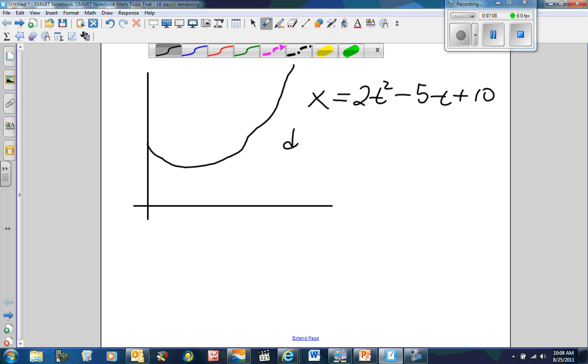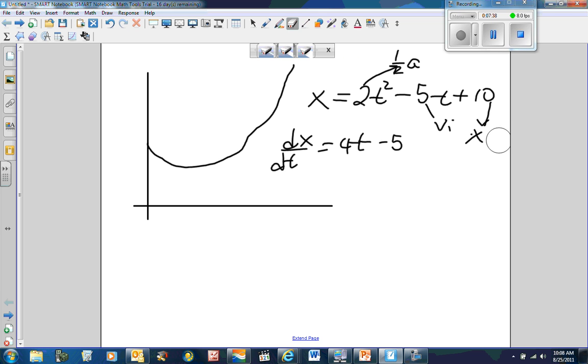And what this means, when I take the derivative, dx/dt, I got 4t minus 5. And what this means, this right here is half of my acceleration. So this is half of my acceleration. This right here is my initial velocity, and this is my initial position. And I think in your AP physics book, and on your AP sheet, they actually do say v naught and x naught for initial positions and initial velocity.